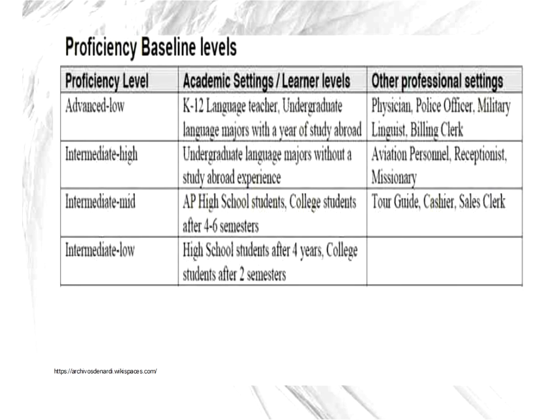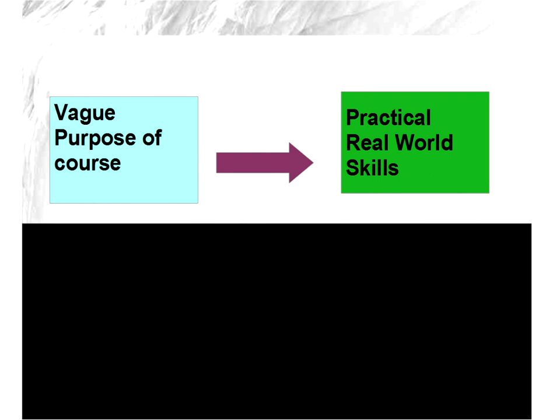According to the data, intermediate low is reached after four years of high school or two semesters of college. The textbooks in the United States are very vague, and the purpose of most courses is simply to cover chapters — my college textbook has four or five chapters to cover, and that's the defined purpose. There's really nothing else defined as to what students have to learn. That's a very vague purpose compared to these can-do statements, which define real-world skills and specify what students have to be able to say. It's a drastic change in how we look at the course.